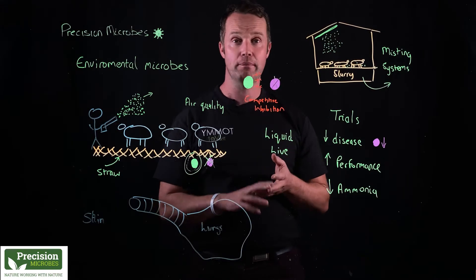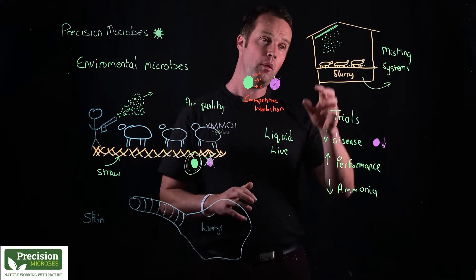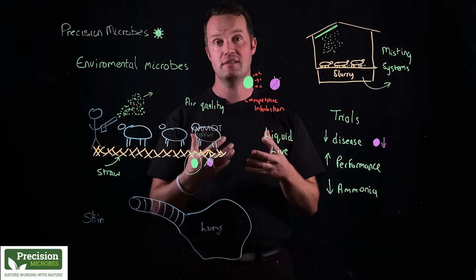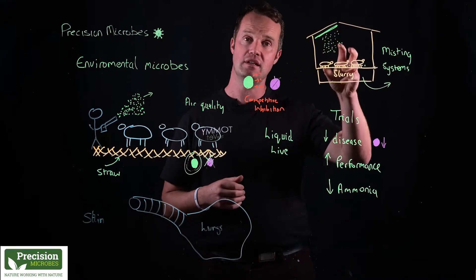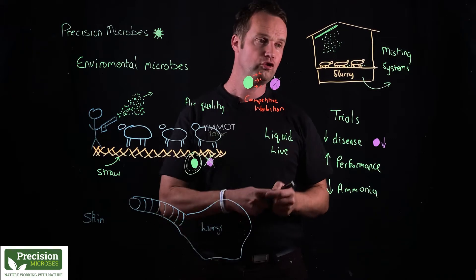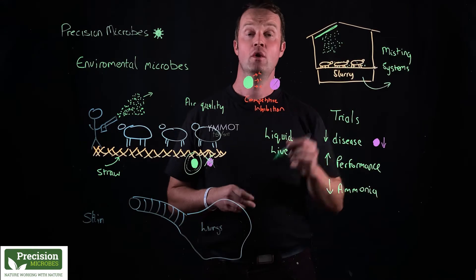But also environmental microbes and slurry microbes. What we're doing with the misting systems here is more regular misting, so automated systems that are misting in these good environmental microbes. We're controlling the microbial population where there's a lot more infection challenge and pressure on animals.